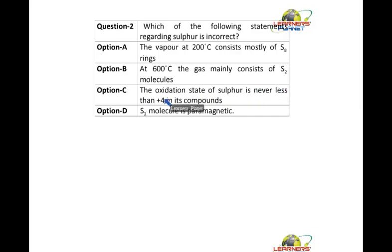The oxidation state of sulfur is never less than plus 4 in its compounds. Is it so? The oxidation state of sulfur can be minus 2 to plus 6. So it can be less than plus 4. This is your incorrect statement. This is the question of just one statement. You can't remember that the vapor at 200 degrees consists mostly of S8 rings or at 600 degrees the gas mainly consists of S2 molecules. S2 is paramagnetic, this we know according to molecular orbital theory.